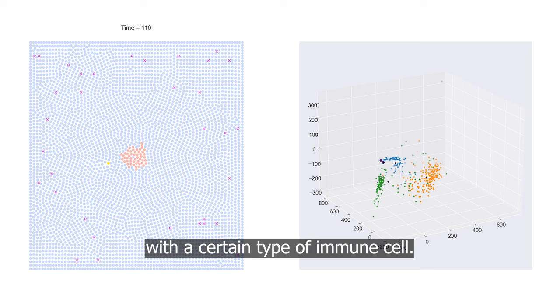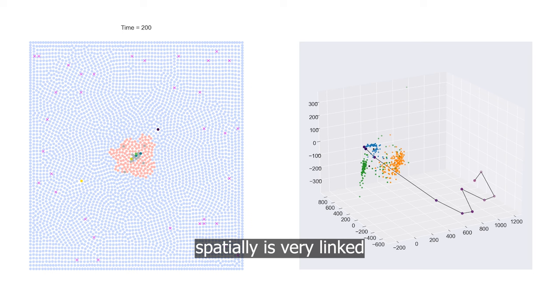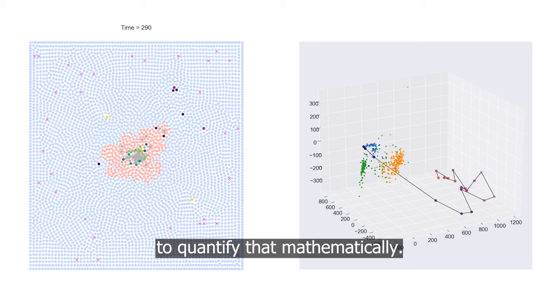The way that the cells act spatially is very linked with how they behave, so we're interested in trying to quantify that mathematically. We can do that with various different statistics and mathematical metrics.